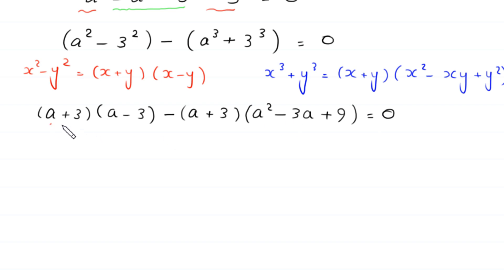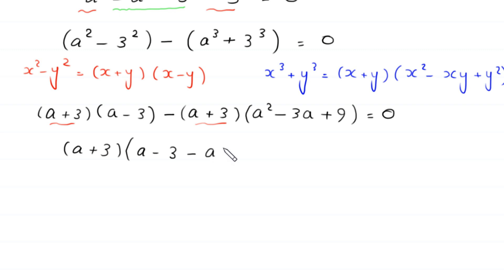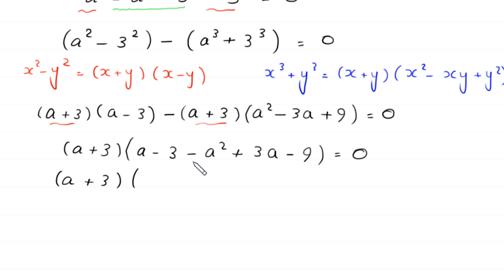As you can see, (a+3) is a common factor, so we factor it out. Left in the bracket: (a-3) minus (a² - 3a + 9), which with the negative sign becomes -a² + 3a - 9. Combining: (a+3) times (a - 3 - a² + 3a - 9) = (a+3)(-a² + 4a - 12) = 0.